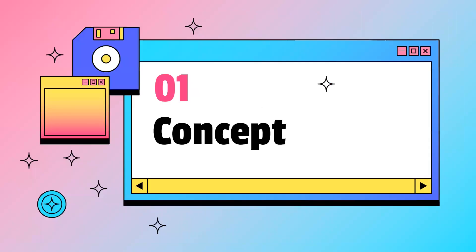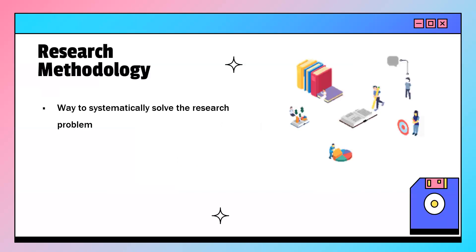Let us begin with the first topic, the concept of research methodology. Research methodology is a way to systematically solve the research problem. As a researcher, we first identify the research problem, second we frame the research questions, and third we move on to making certain assumptions about what could be the solution to the particular problem. We need to prove, measure, and test those assumptions, and thus we come about with a systematic way to solve the research problem. So that is our research methodology.